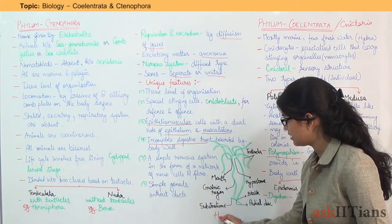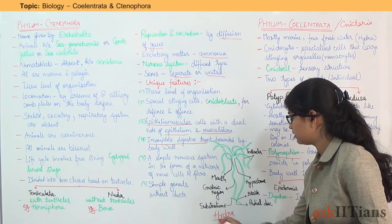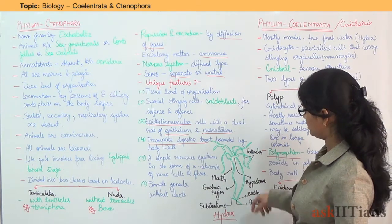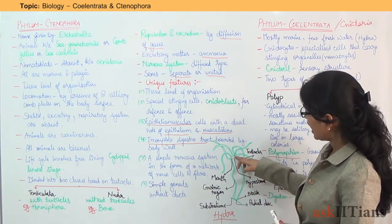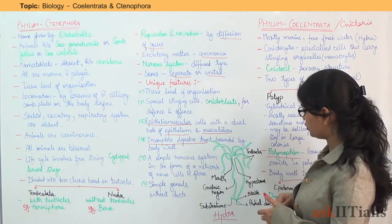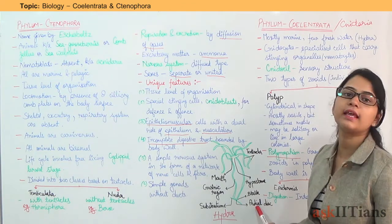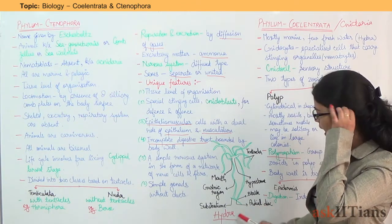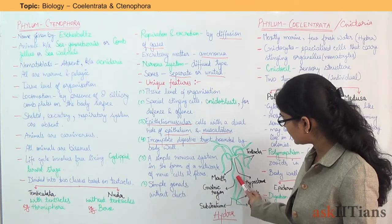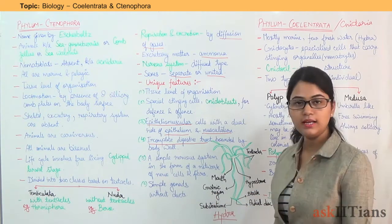Here is an example of Hydra. Hydra has tentacles and a hypostome — this part is known as the hypostome. There is a stalk, and a basal disc is present at the base. The mouth is present here. This region is the gastric region, and it lies on the substratum.